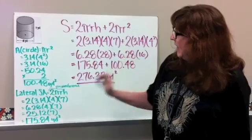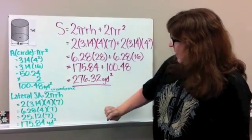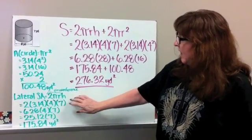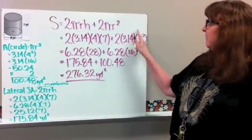If you did it using a net, you should have got your circle, and you put your two circles together here, and then your middle part, your middle part here, where you find the circumference, and find the area of your rectangle, and then just add those up, if you did a net or if you did the formula.